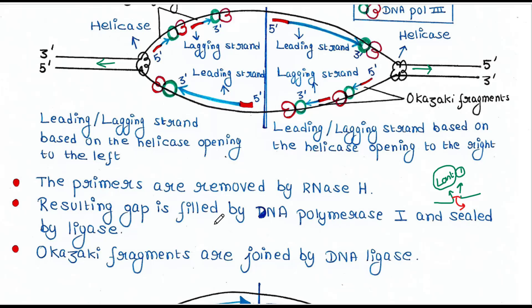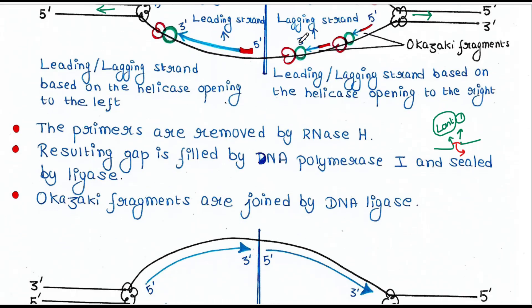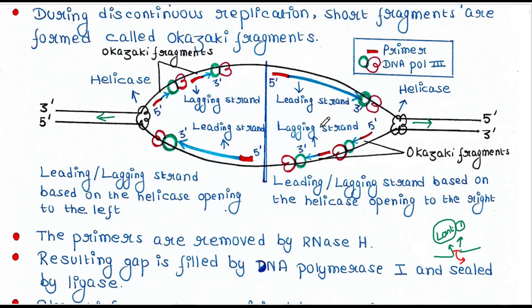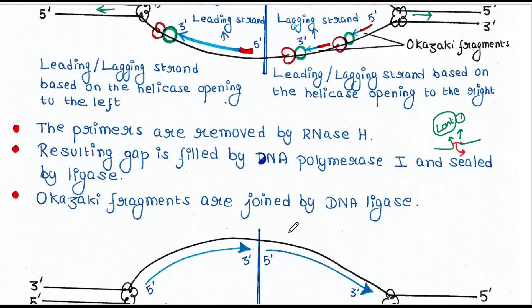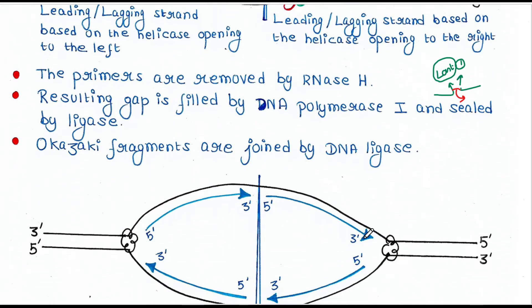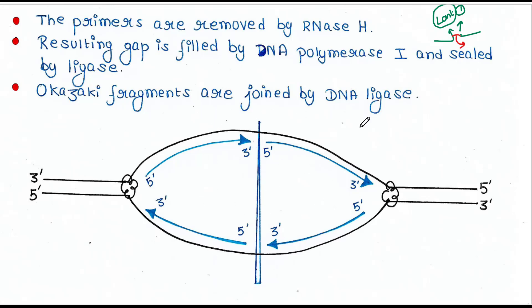Last but not the least, the fragmented lagging strand — the Okazaki fragments — are also joined by DNA ligase. Finally, you get the complete product of DNA replication. This is all about today's lecture. I hope you liked it. Thank you for watching.